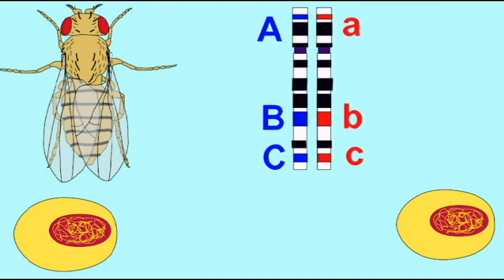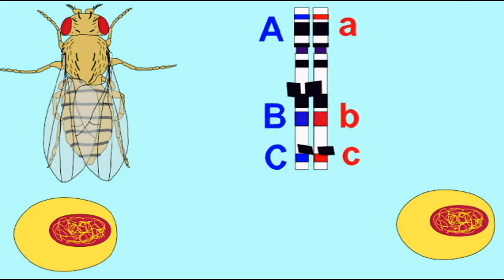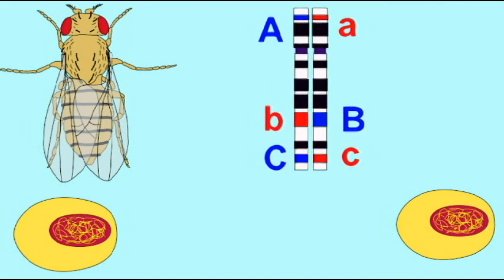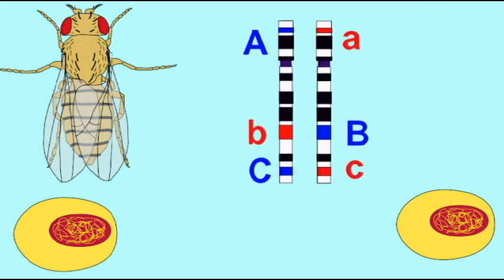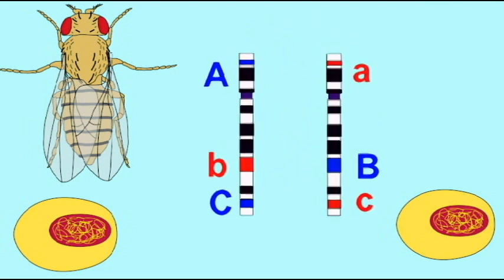And so therefore the likelihood that two crossovers occur is less than the likelihood of just one. And so we will observe mutants with only the B mutant phenotype less than mutants with the A or the C.